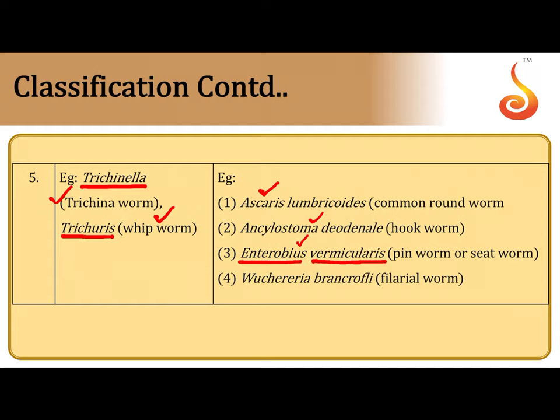Enterobius vermicularis is a common infection seen in children. Another notable example is Wuchereria bancrofti, the worm transmitted by the Culex mosquito. It lives in the lymph nodes and lymphatic vessels of the infected person's body. Wuchereria bancrofti causes extreme swelling of the lower extremities and gross deformities, a condition referred to as filariasis or elephantiasis.